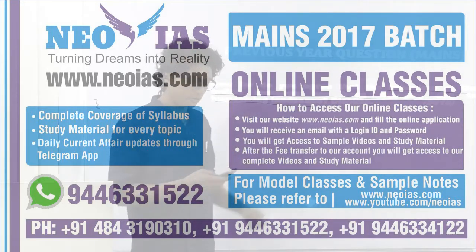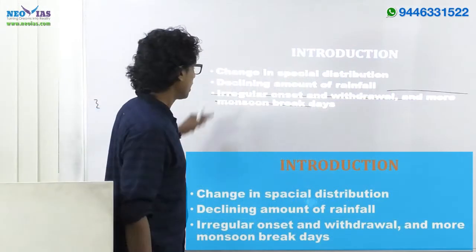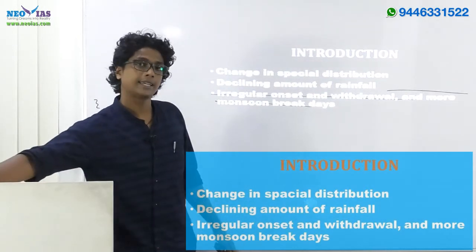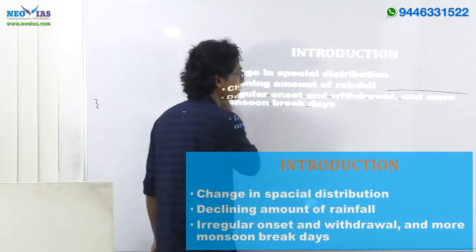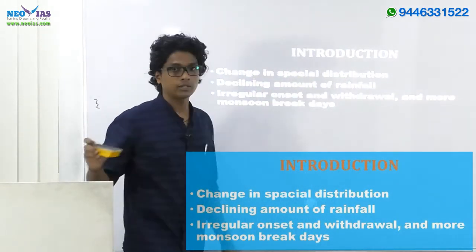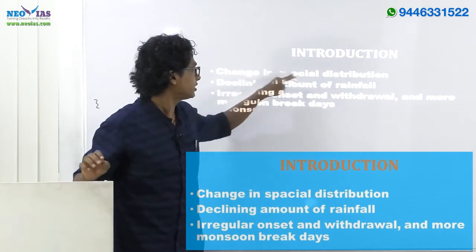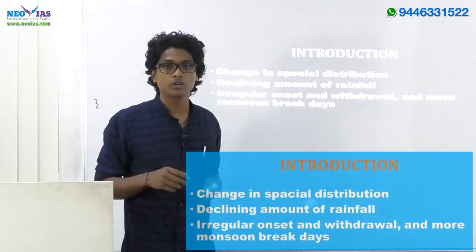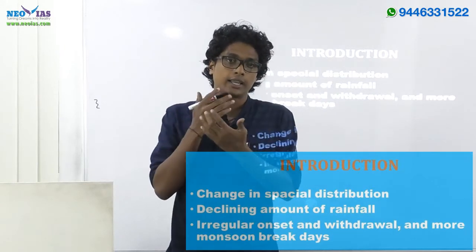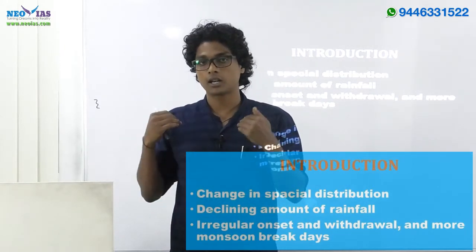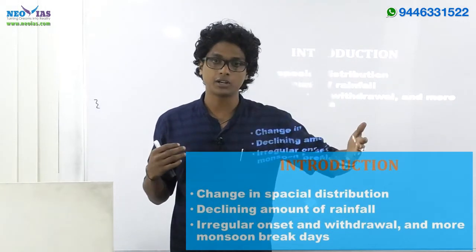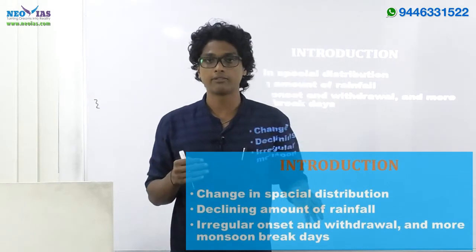Let's start with the introduction part. Under the introduction, you have to come up with the changes or behavioral changes in the pattern of the Indian Monsoon. The first thing is the change in the spatial distribution of Indian Monsoon. For example, recently Rajasthan, which usually has less rainfall, is having more rainfall occurring over that region.